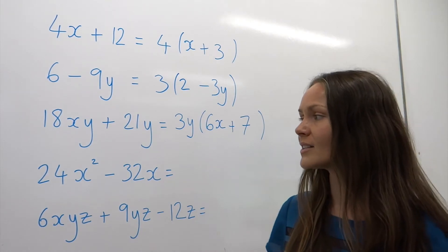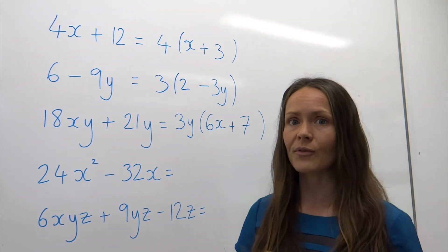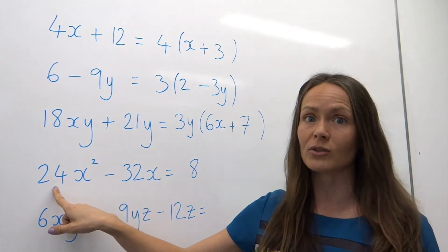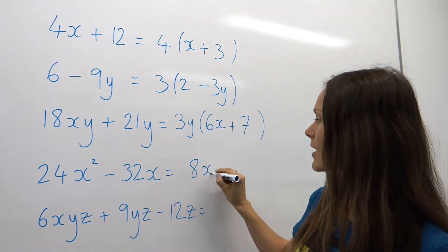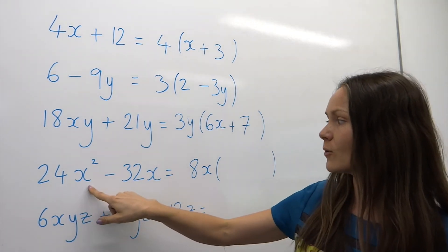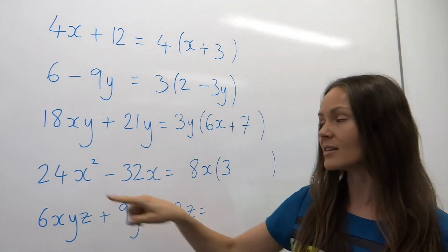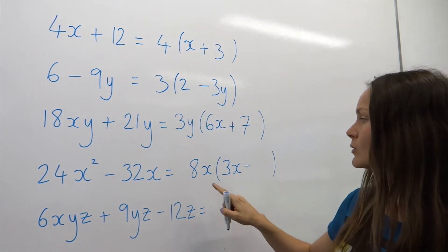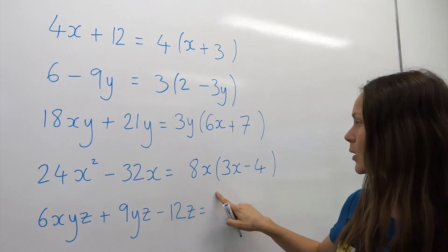Next one: what's the highest common factor in 24 and 32? Well, 2 is a factor but not the biggest; 4 is also a factor but not the biggest either — it's actually 8, the highest number that fits exactly into both 24 and 32. There's also a common letter x in both terms, so write down 8x. Open the brackets: what do you multiply 8x by to get back to 24x²? 8 multiplied by 3 gives 24, and x multiplied by x gives x², so write in x. Watch out for the minus sign — 8x multiplied by negative 4 takes you back to minus 32x.